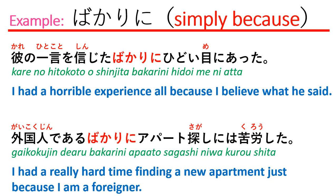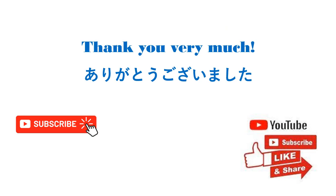Here you see that it was really hard to find an apartment just because you are a foreigner — that is a simple reason, but it's negative for you. So you can use ばかりに to help explain the situation. Thank you very much for watching. Please subscribe to my channel if you haven't, and I hope to share more Japanese JLPT N2 grammar videos next time. Arigato gozaimashita.